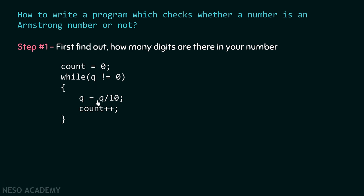Here is the program that helps us find the order of a number. We have a variable 'count' initialized to zero. Inside a while loop, we check whether q equals zero. If it does, we exit the loop. Otherwise, we divide q by ten — dividing by ten gives us the number without the last digit — store that result back in q, and increment count.